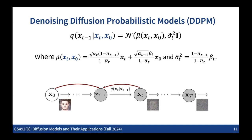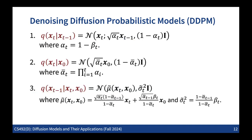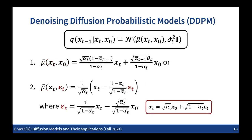The key thing to remember about the mean of this Gaussian is that it is computed as a linear combination of X_T and X_0. So if we have X_T and X_0, we can compute the mean. Conversely, if we have X_T and the mean, we can also compute X_0. These are the three main conditional distributions you need to remember to implement the DDPM.